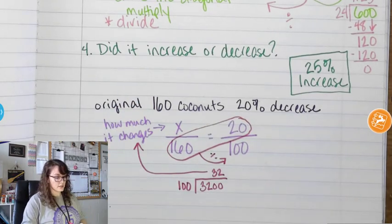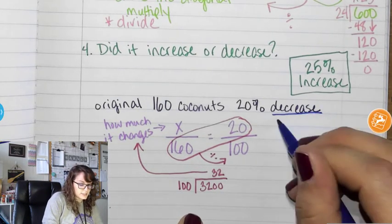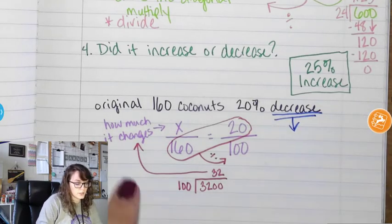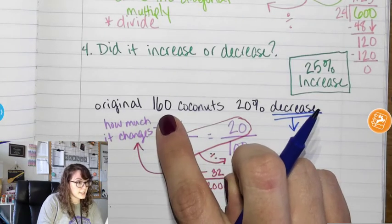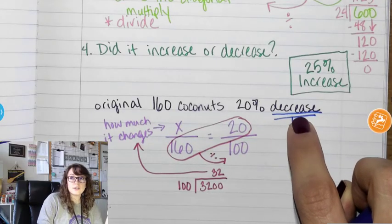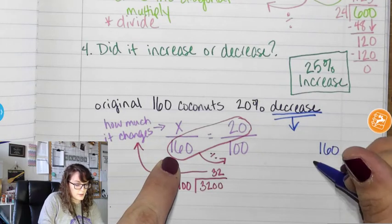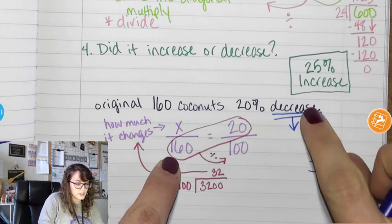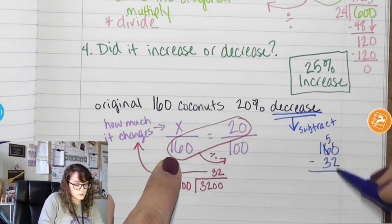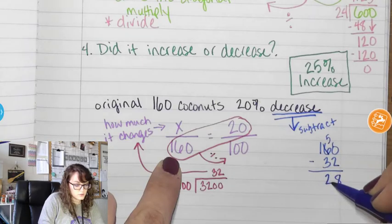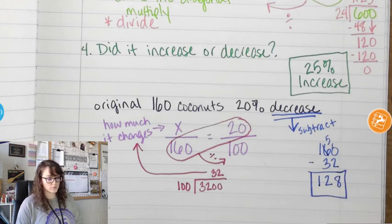So if it was 160 and it changes 32, it decreased — it goes down. I started at 160, and I just found out it goes down 32 coconuts. So I have to do 160 coconuts minus the 32 coconuts that it decreased. That means subtract — so that's going to be 128. Now I have 128 coconuts.